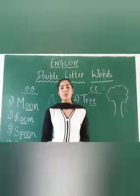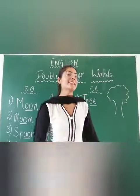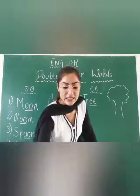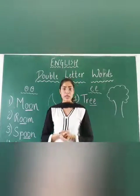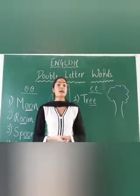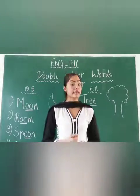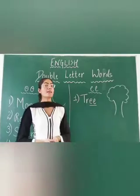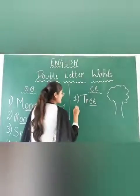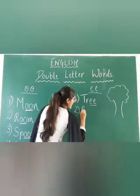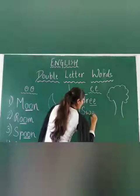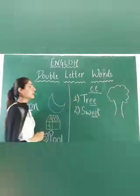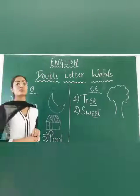Now let's see the second word. What is this? This is chocolate. Chocolate is sweet — meethi hoti hai. And sweet in English is 'sweet'. What is the spelling of sweet? S, W, double E, T — sweet. Double E is used.